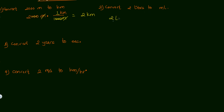Now let's convert 2 liters to milliliters. I put milliliters on the numerator and liters on the denominator. The conversion factor is: 1000 milliliters equals 1 liter. The liters cancel, giving us 2000 milliliters. That's how you convert liters to milliliters.